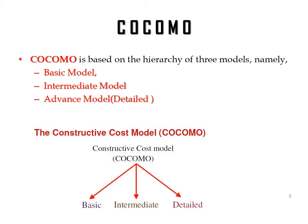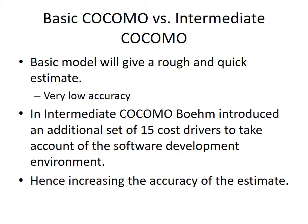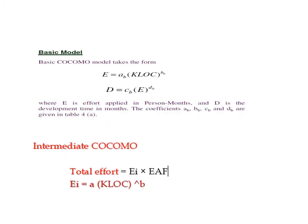In this session we are discussing Intermediate COCOMO, having already discussed Basic COCOMO. The difference between them is that Basic COCOMO gives a rough and quick estimate with low accuracy, because it only considers whether the project is organic, semi-detached, or embedded based on size or complexity. In Intermediate COCOMO, Boehm introduced an additional set of 15 cost drivers to account for the software development environment, thereby increasing accuracy.